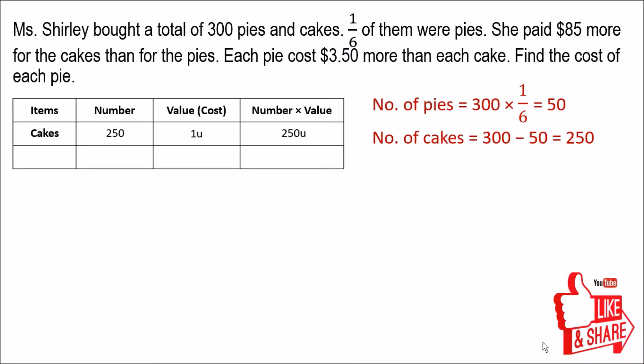For the pies: there are 50 pies. The question says each pie costs $3.50 more than each cake, so the cost of each pie is one unit plus $3.50. Multiplying this out gives us 50 units plus $175, since 50 times one unit equals 50 units and 50 times $3.50 equals $175.